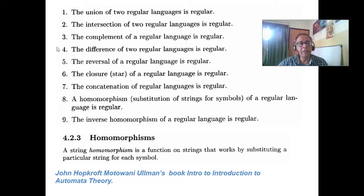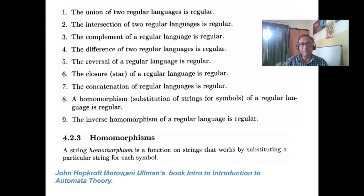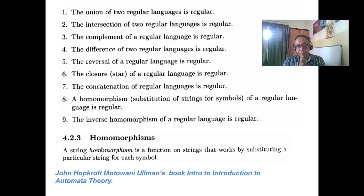Regular language — you all know the rules are closed, that means a closure. The most interesting rule is homomorphism, which I discussed in my class yesterday. What is homomorphism? A homomorphism is a function on a string that works by substituting a particular string for each symbol. I have taken the definition from Hopcroft-Ullman's book, which is available with you as a soft copy and hard copy. Homomorphism means you are replacing the input alphabet sigma with other symbols.